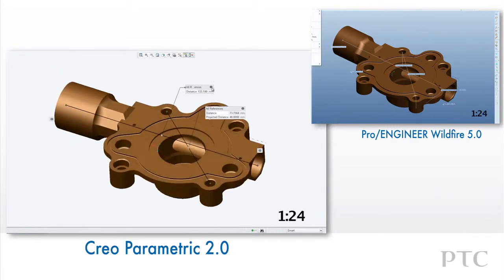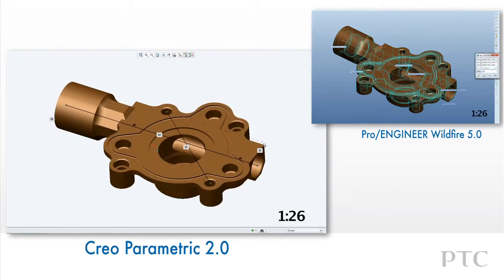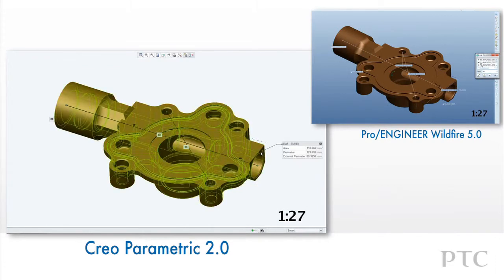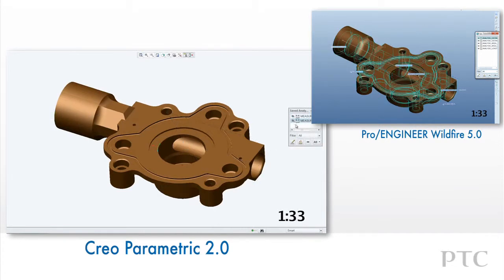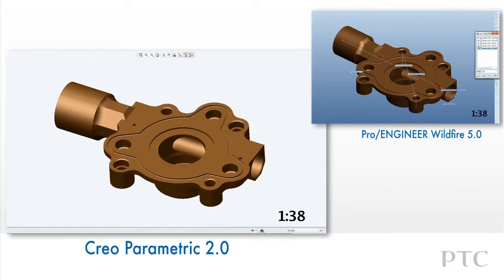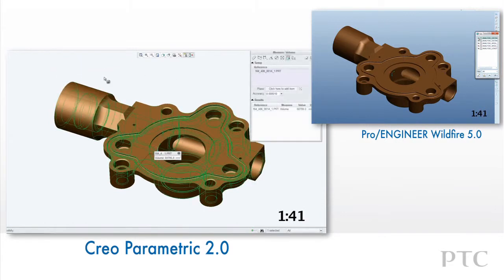We can still access specific measure functions if we want them using the dropdown. But even after selecting a specific function, we can switch the dialog to another type of measurement. In Wildfire 5, we would have to close out the dialog and start all over. We've shown some of the key highlights in measuring geometry with Creo Parametric, including new capabilities and streamlined workflows.